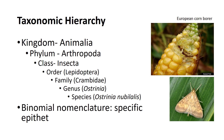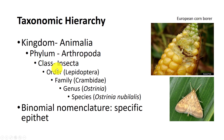Characteristics get more specific as one goes down the taxonomic hierarchy. For example, the European corn borer is in the Kingdom Animalia, Phylum Arthropoda, Class Insecta, Order Lepidoptera, Family Crambidae, Genus Austrinia, and then species Austrinia nubilellus.